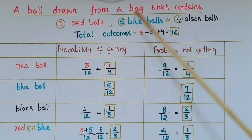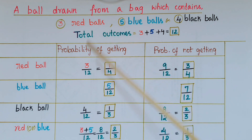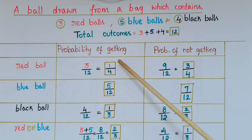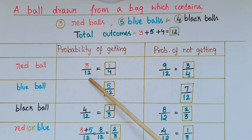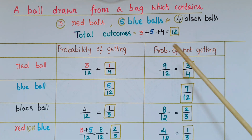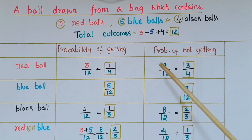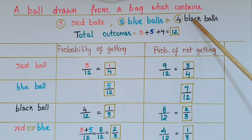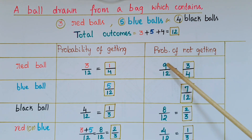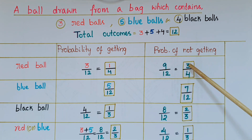Probability of getting a red ball is equal to three by 12, that is one by four. Probability of not getting a red ball: except red balls there are five blue balls and four black balls, so five plus four is nine, giving nine by 12 equal to three by four.